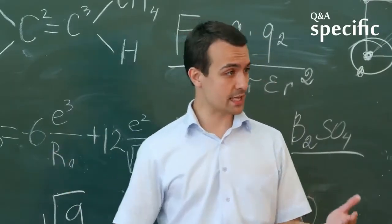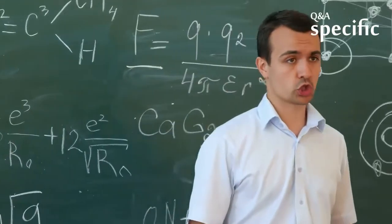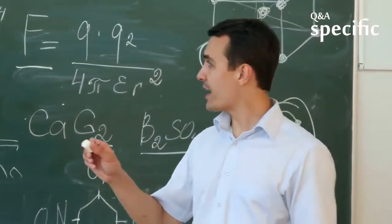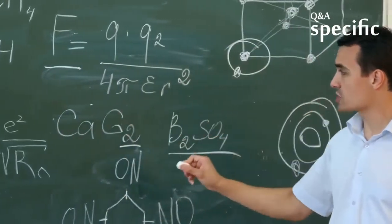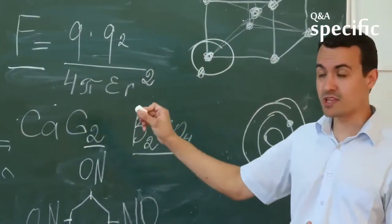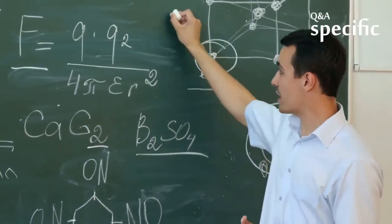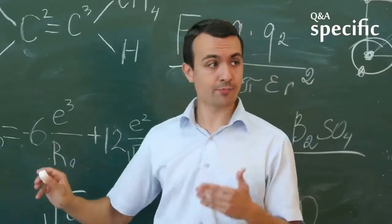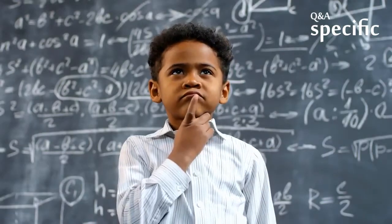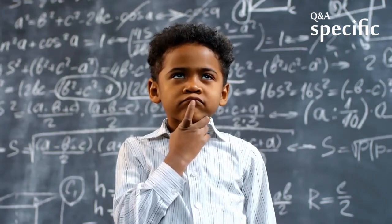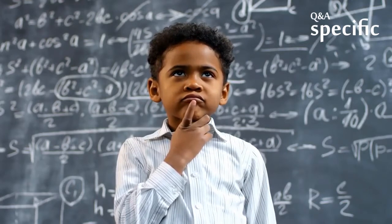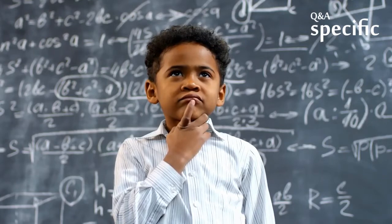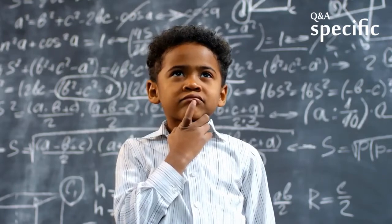Modern physics, computer science, statistics, electrical engineering, and information theory rely heavily on deeply abstract mathematical theories which, in part, were developed long before anyone dreamed of such applications. So for some people abstract math is important because it holds the promise of the pragmatic, and for some people it is important regardless of any such promise, or precisely because it has none.